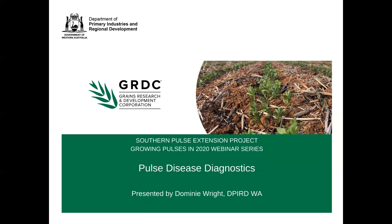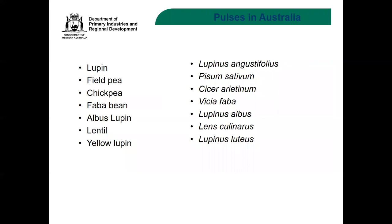Thank you, Claire. Good afternoon, everyone. Today's topic on pulse disease diagnostics is extremely broad and I'll only be covering a small section of it. Pulses or grain legumes grown in Australia cover lupins, field peas, chickpeas, faba beans, albus lupins, lentils and yellow lupins. All of these crops are susceptible to either fungal diseases or bacterial diseases on their leaves or upper stems. They also get root diseases caused by fungi or nematodes, and they're all susceptible to viruses.